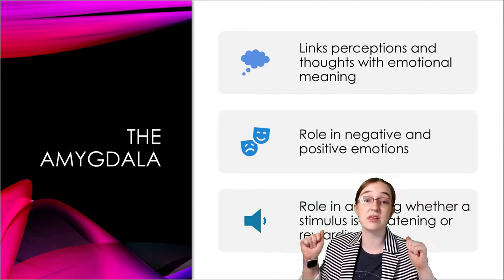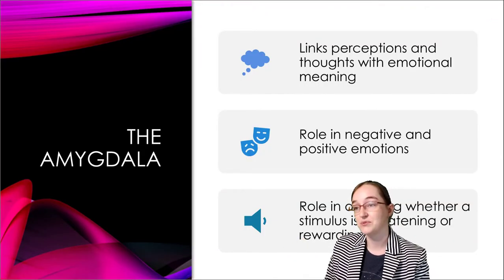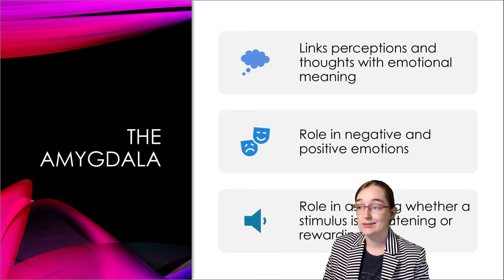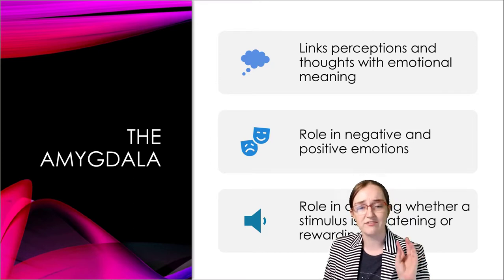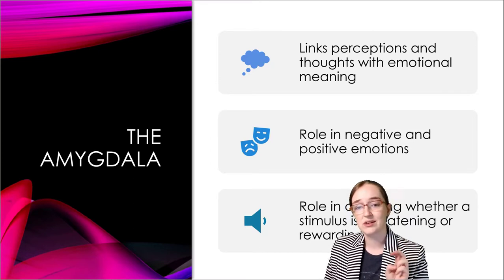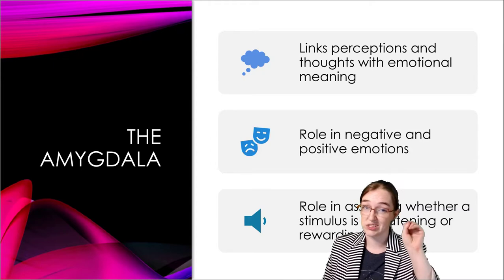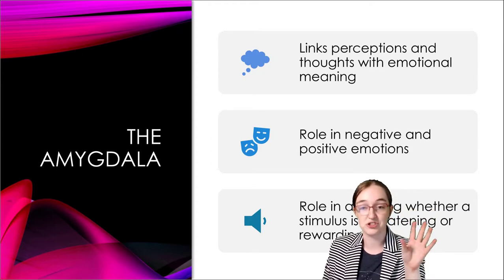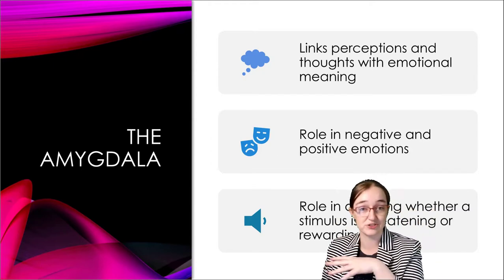Let's start with the amygdala. This links perceptions and thoughts with emotion. It seems to have a pretty strong role in negative emotions — anger and fear especially. It lights up in people who are shy, so those with lower levels of extroversion, when they're shown pictures of strangers.